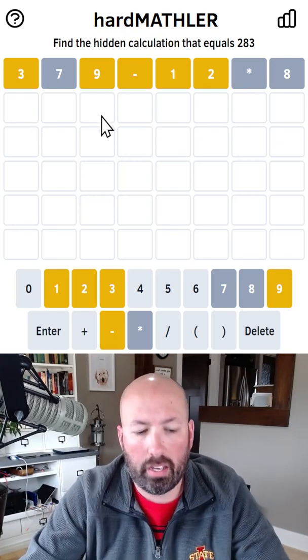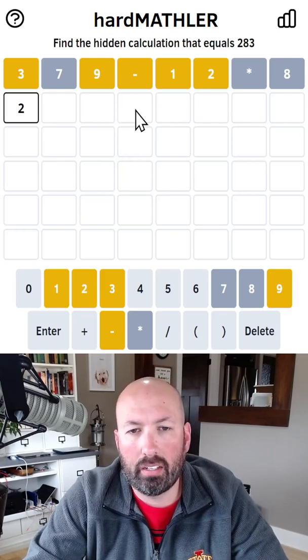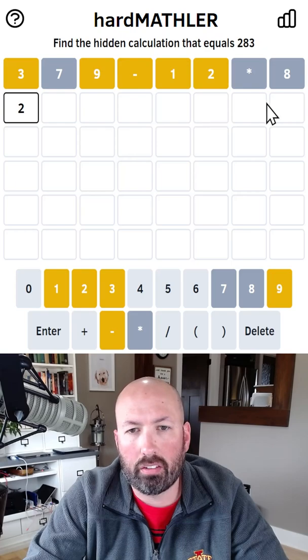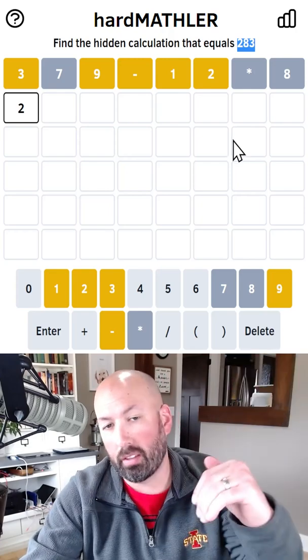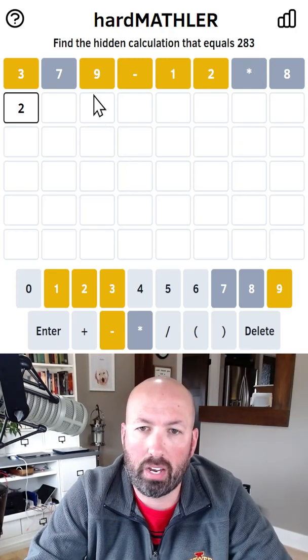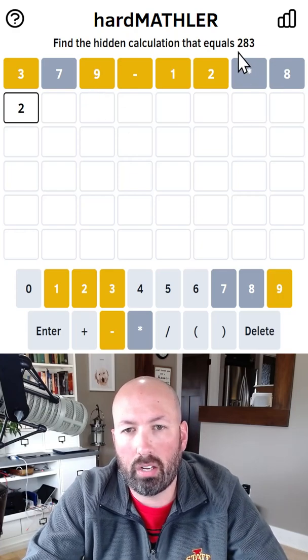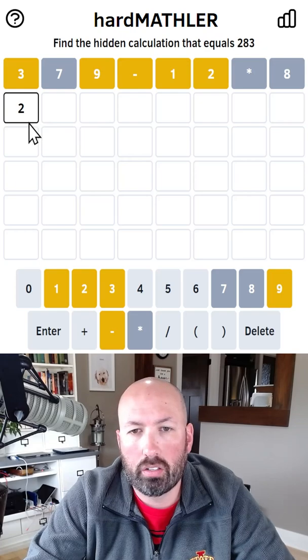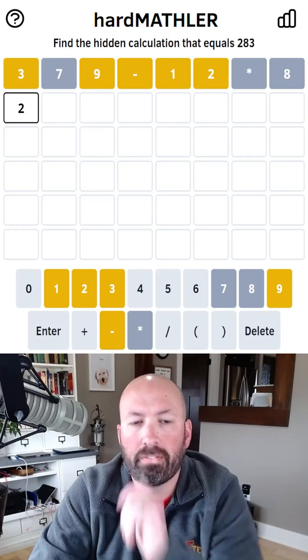What if we did like 200 and something, and then we added and then subtracted. So we could start below 283, add to go above 283, and then subtract to get back down to 283, something like that. So we could maybe subtract like, if we subtract nine at the end, we'd be at 292. So 200 and something plus something to get to 292, maybe?